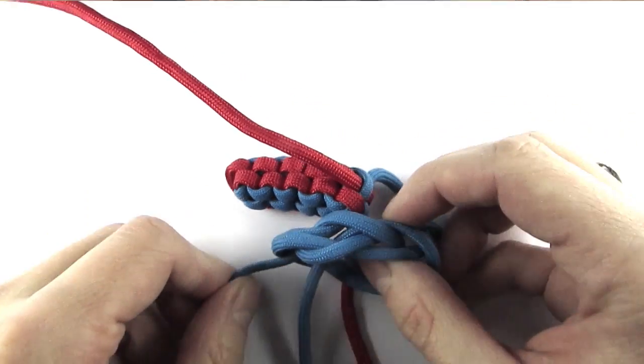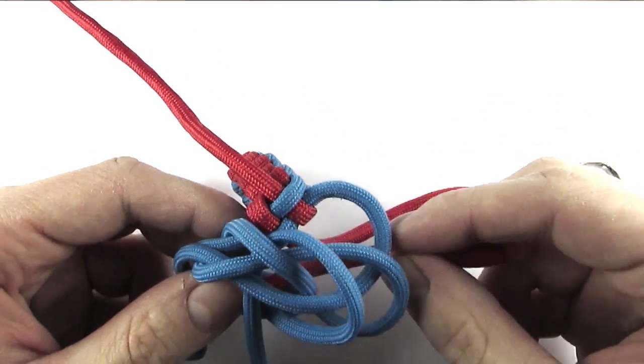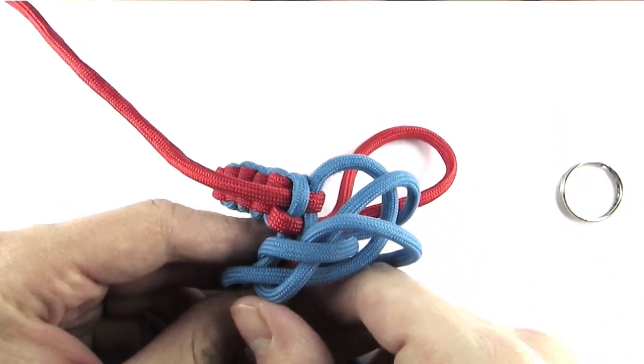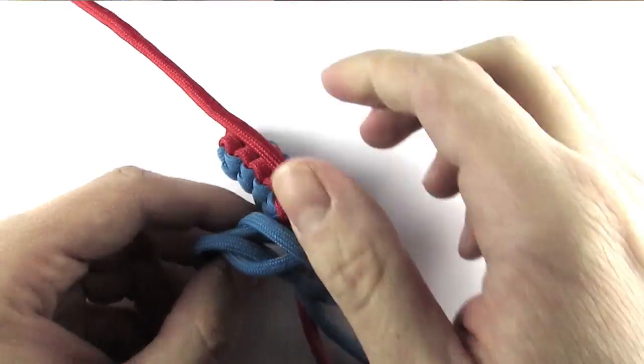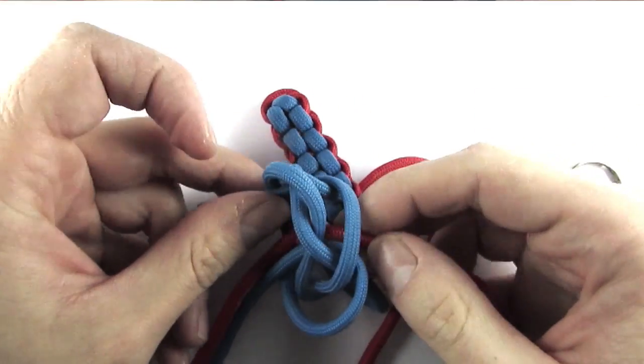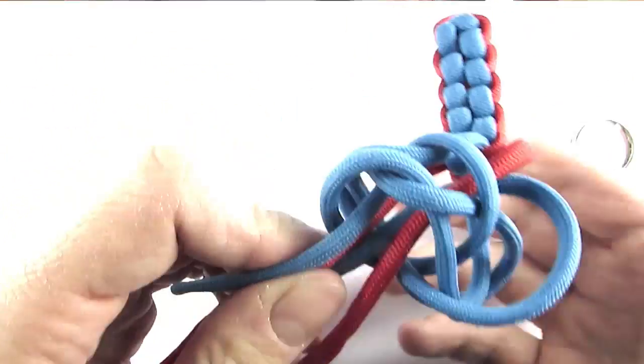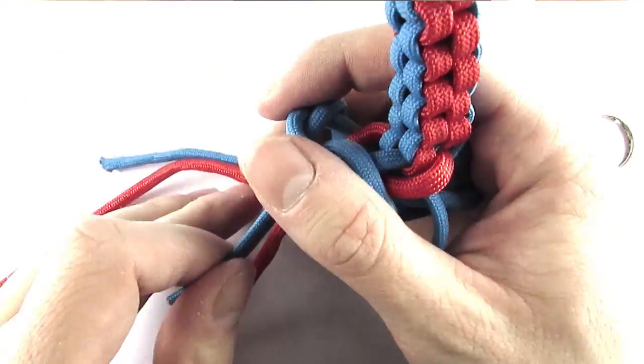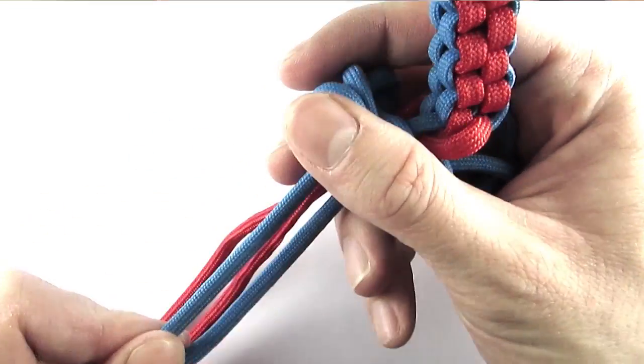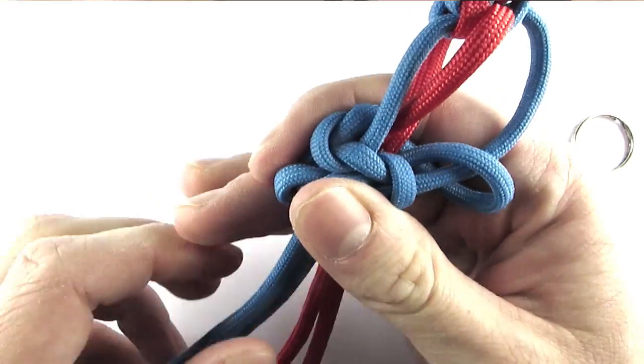But before I'm going to pull these ends to tighten the knot I'm also going to insert the other two ends through the middle loop. Which will give me four cords coming out of the knot instead of just the basic two from the lanyard knot. And at this point I'll be back when the knot is tightened.